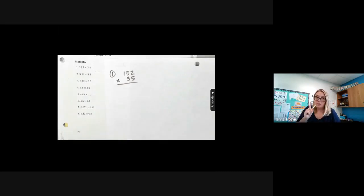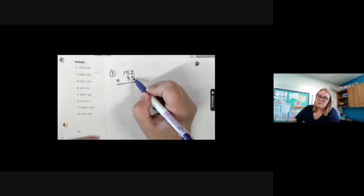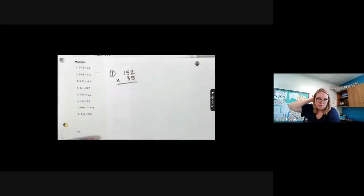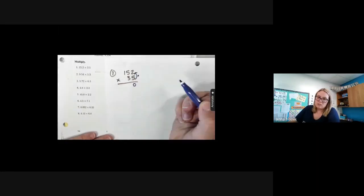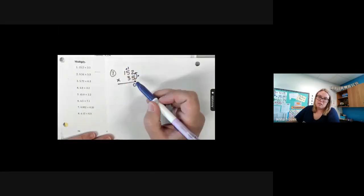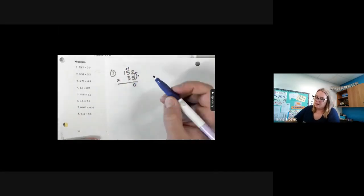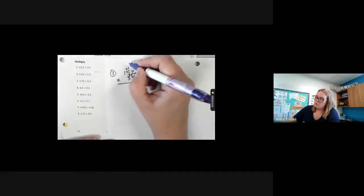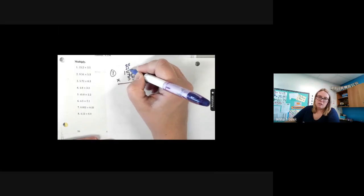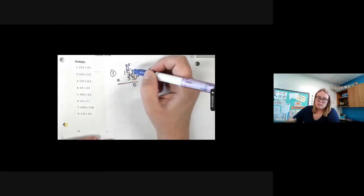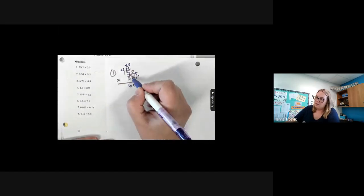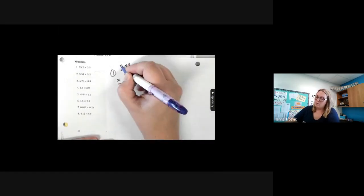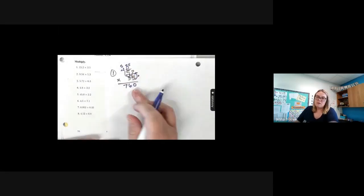Traditional algorithm — we can only go one number at a time in the second number. So I'm going to start with number five, and I'm going to multiply it by each piece one at a time. Five times two is 10. My zero goes down below, and I carry a plus one above the five. Then five times five gives me 25, plus that one I carried, which equals 26. That puts a six down below and a plus two above the next number. Then five times one equals five, plus two equals seven. So now I have 760.